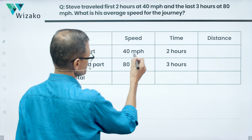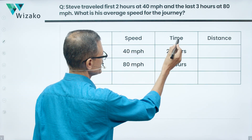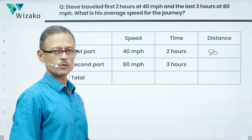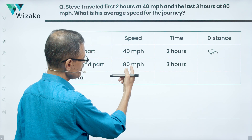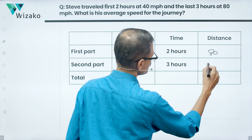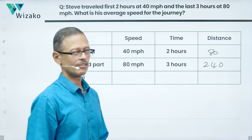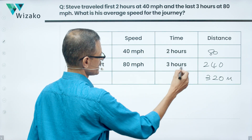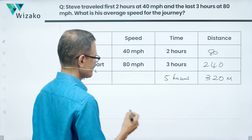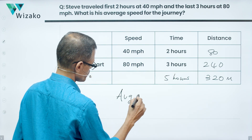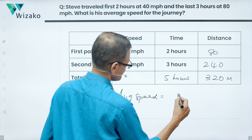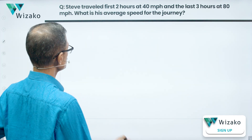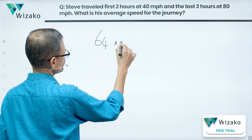First part: travelled at 40 miles per hour for a duration of two hours. Speed into time will give us the distance — 40 times 2 is 80 miles for the first part. Second part is 80 miles per hour for three hours, so 80 times 3 is 240 miles. Total distance travelled is equal to 320 miles and total time taken is equal to 5 hours. Average speed is equal to total distance travelled, which is 320, divided by total time taken, which is 5.